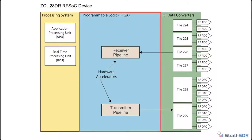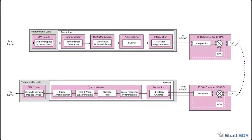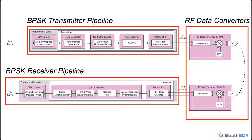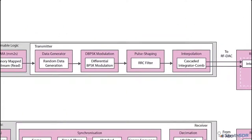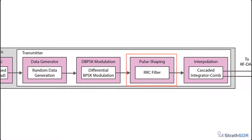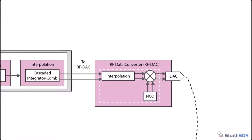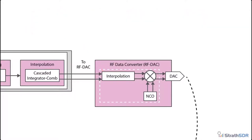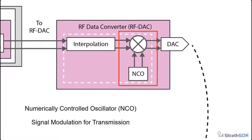Let's now examine the portion of the radio design targeting the FPGA programmable logic. The radio system architecture shows a transmitter, receiver, and RF data converters hosting the RF DAC and RF ADC. The transmitter contains a BPSK modulator, a root-raised cosine pulse shaper, and an interpolation stage in the FPGA logic fabric. The remainder of the interpolation stages are implemented in the RF DAC block, which can interpolate the signal by a factor of 8 using a cascade of three half-band interpolators. The signal is modulated with a carrier frequency using a local numerically controlled oscillator (NCO), entirely in the digital domain.